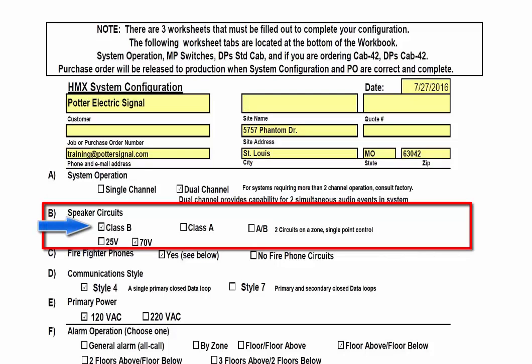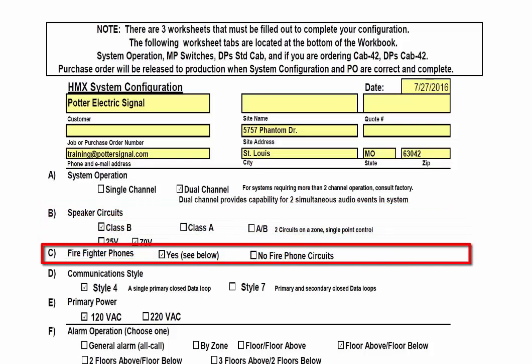After determining the wiring scheme for the circuit, you will need to choose whether it will be a 25-volt or 70-volt circuit. Firefighter phones are optional. If your system includes fire phones, then select Yes. Note that while up to five phones can operate simultaneously on a single phone circuit, party-line service is not available.